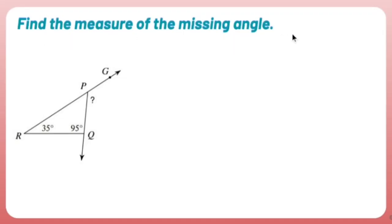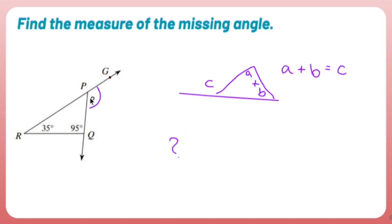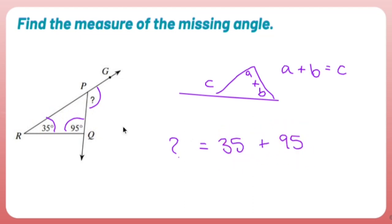Find the measure of the missing angle. We're now going to use the exterior angle theorem. An exterior angle is created from one of the lines of a triangle extending past the vertex. The exterior angle equals the sum of the two opposite interior angles. So the question mark equals 35 plus 95 — and 35 plus 95 is 130. The question mark is 130 degrees.